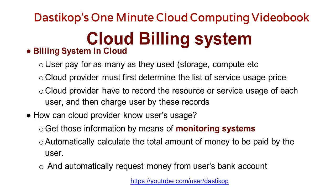How can a cloud provider know a user's usage? This information is obtained by means of what is called a monitoring system. As soon as a user starts using a resource, the system will monitor it. You have probably seen this in Gmail — when you create an account you are given about 15 GB of space, and as you start consuming it, it gives you an indication saying you have used 17 percent, 23 percent, and so on. This is called the monitoring system, which automatically calculates the total amount of money to be paid by the user.